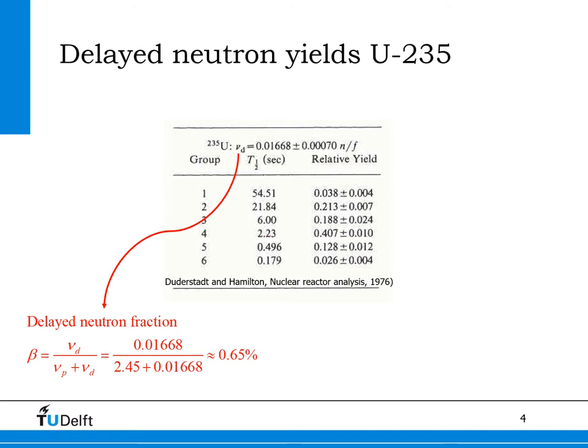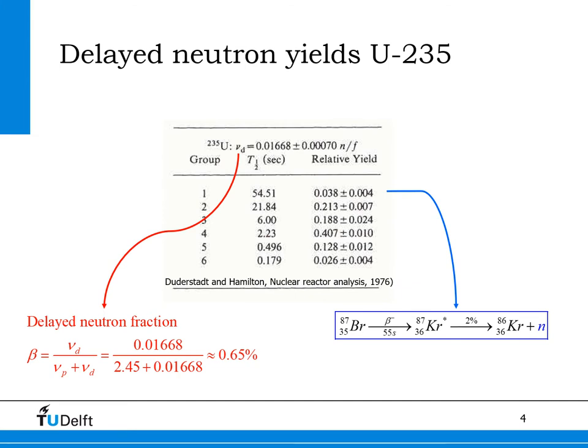The table shown shows the split-up of the precursors into 6 families, though sometimes in other datasets 8 families are used. The half-lives of the precursors of uranium-235 range from 0.18 to 55 seconds, and the latter is mainly due to the decay of bromium to krypton that we've seen before. On average, it takes about 13 seconds until the delayed neutron is emitted.